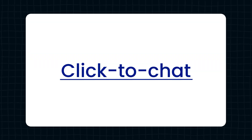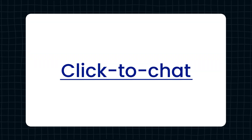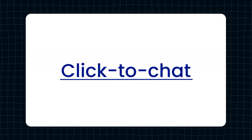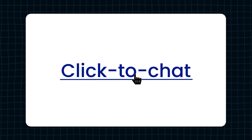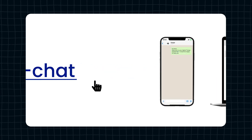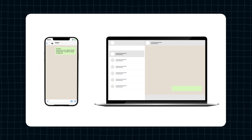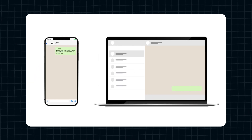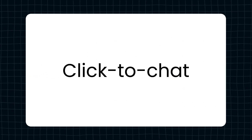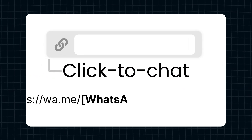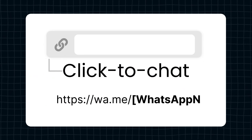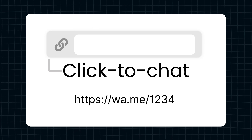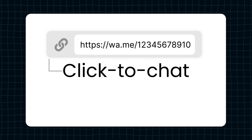The click-to-chat feature lets customers click a hyperlinked piece of text to start a chat via WhatsApp — here we can immediately start chatting with this company. You can create a click-to-chat link by hyperlinking a piece of text with this link. Simply add your WhatsApp number right here.